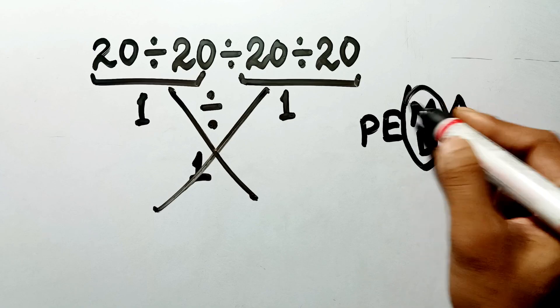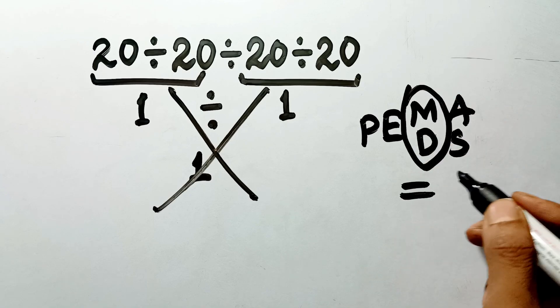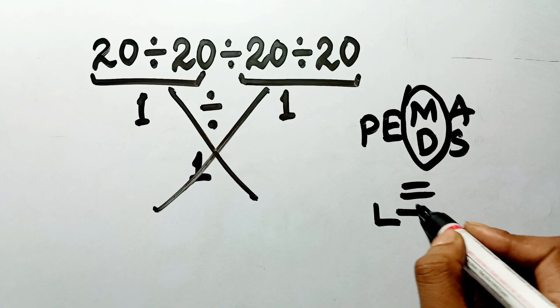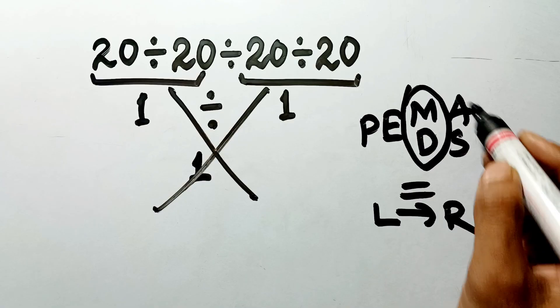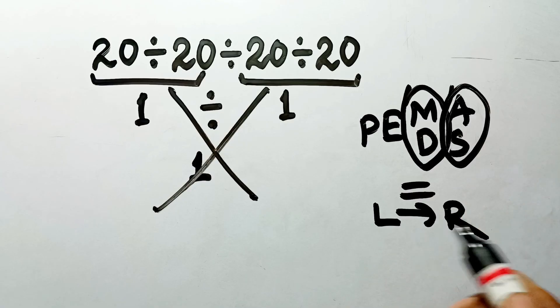Remember that multiplication and division have equal priority, and we have to work from left to right, and the same applies to addition and subtraction.